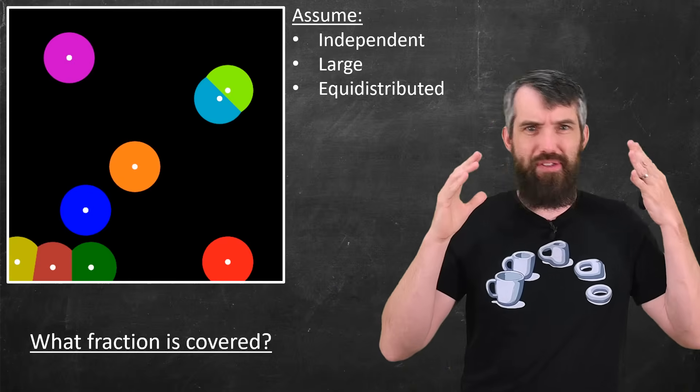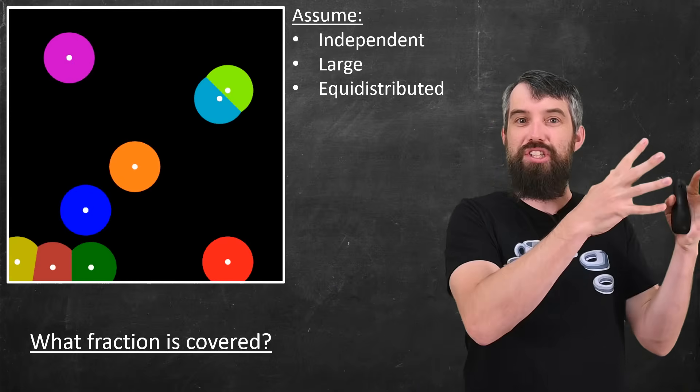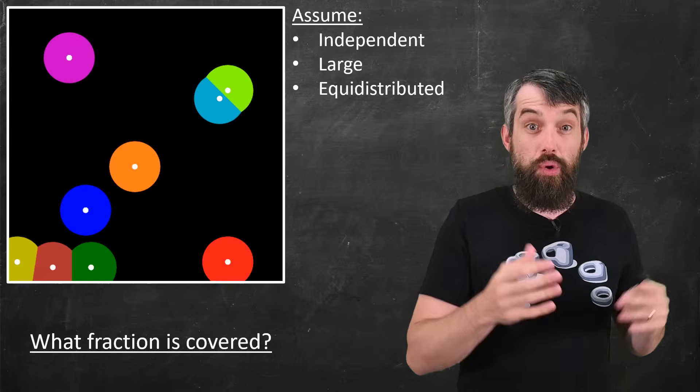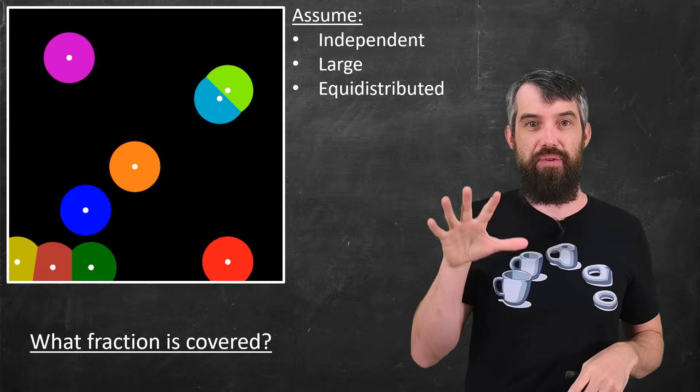That is, there's no sort of systematic bias going here where they're all sort of shoved into one corner. They're so-called equidistributed around the region.